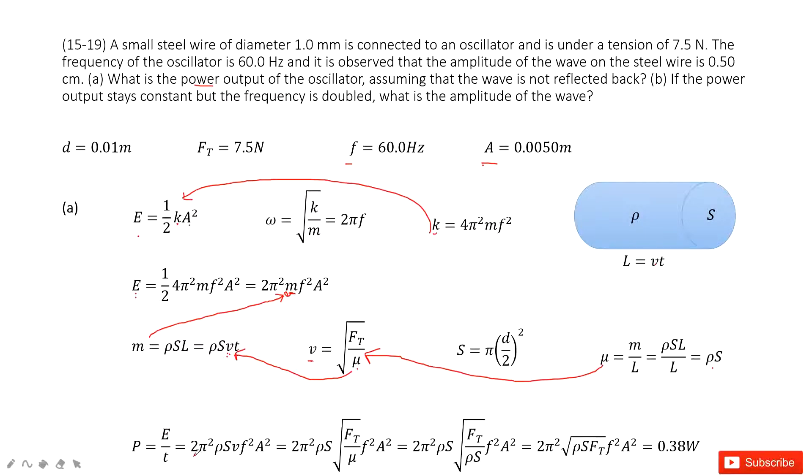So T cancels. We get 2π squared. And then this mass is ρSVT times f squared A squared. And then we input V inside.